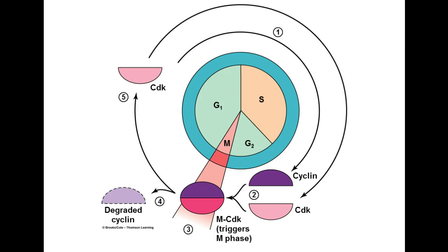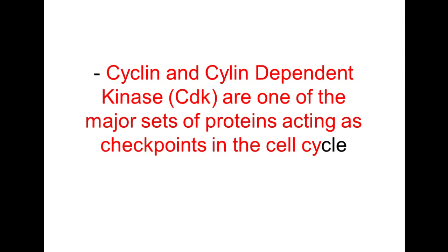Cyclin-dependent kinase, as the name implies, depends on the concentration of cyclin. A kinase is a material that turns on and turns off — activates and inactivates — other proteins. Cyclin and cyclin-dependent kinase are one of the major sets of proteins acting as checkpoints in the cell cycle.